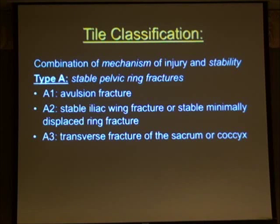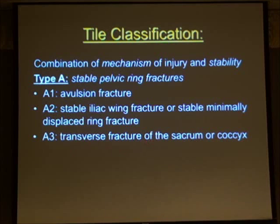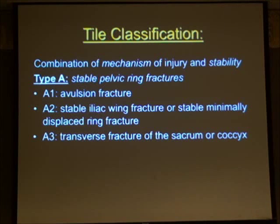Type A fractures can be subdivided into A1, A2, and A3. They include avulsion fractures, stable iliac wing fractures, or transverse fractures of the sacrum and coccyx. It's important to note that a transverse sacral fracture may be potentially unstable — it may have other fracture lines, such as a jumper's fracture with an H-shape or I-shape component. When you have a transverse fracture, get a lateral sacral view or CT scan to ensure the sacrum hasn't displaced anteriorly.